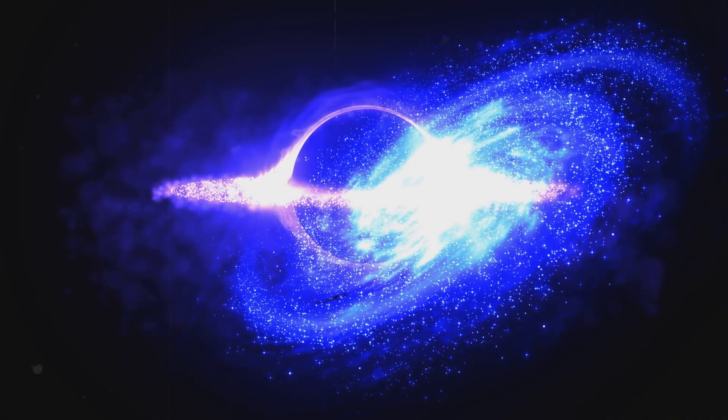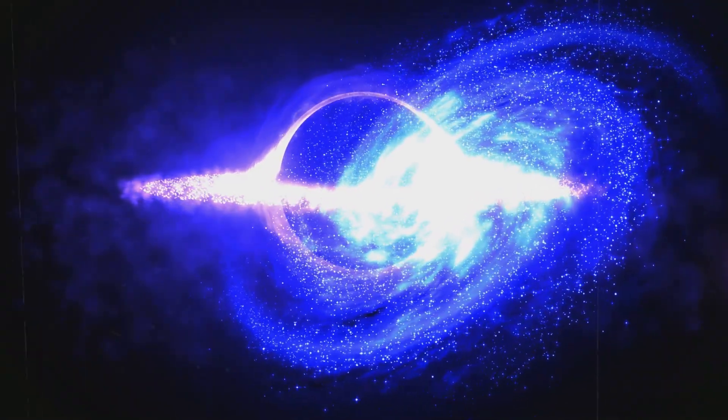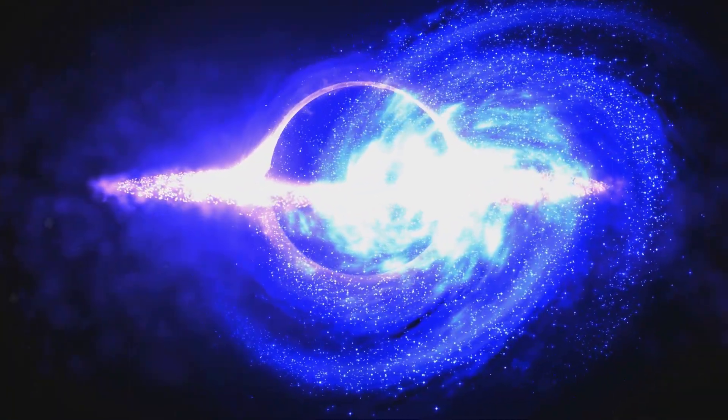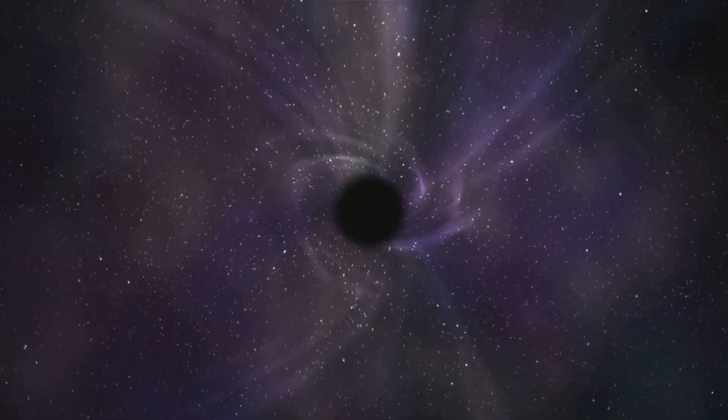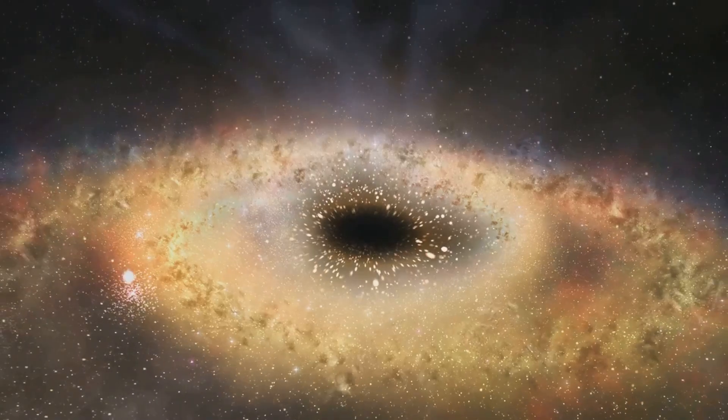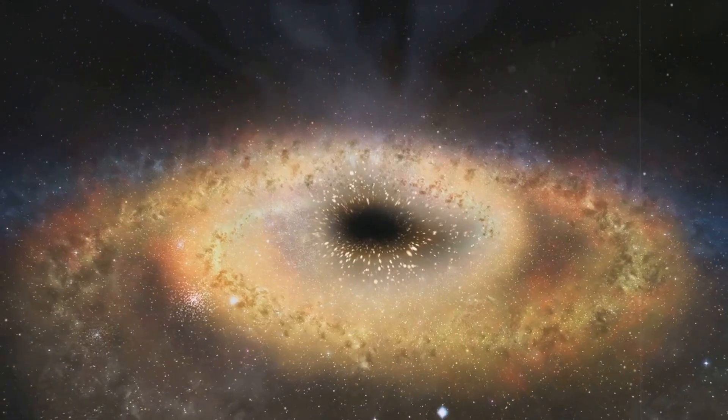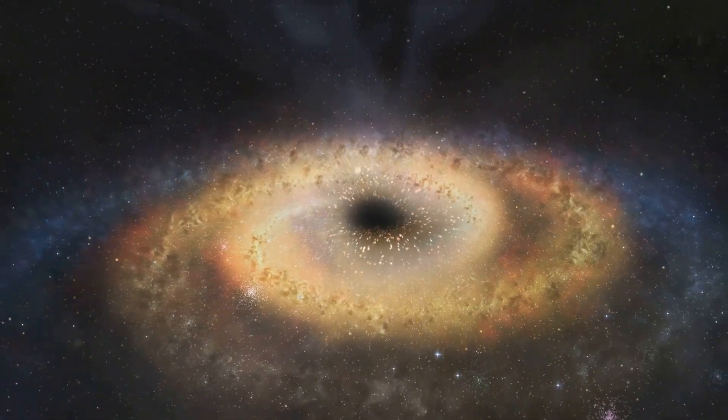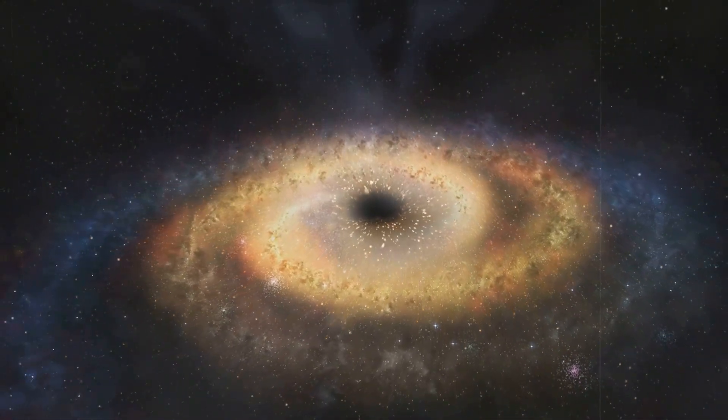Scientists believe this rogue black hole, several times the mass of our sun, was ejected after a violent encounter. It now roams the galaxy, capable of consuming anything in its path. Though still distant, its trajectory suggests a course that could bring it perilously close to our corner of the galaxy.